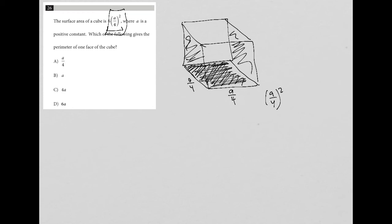So I know that this side is a over 4. I know that side is a over 4. Obviously, because it's a square, this side is also a over 4. This back side here is also a over 4.